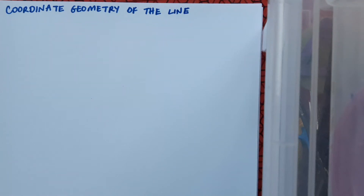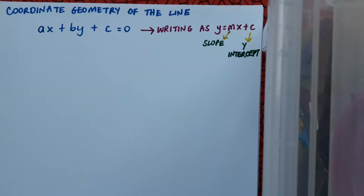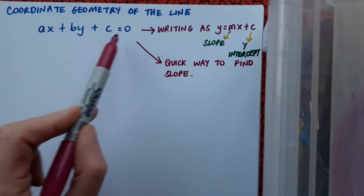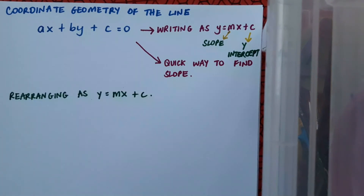In this video on coordinate geometry of the line, I'm going to look at the line when it's written in the form ax plus by plus c equals zero. I'll be looking at how we can rewrite it as y equals mx plus c in order to easily read off the slope and the y-intercept, and I'll also look at a quick way to find the slope from this format without having to rearrange. But first, let's look at how to do the rearrangement into y equals mx plus c, starting with an example.